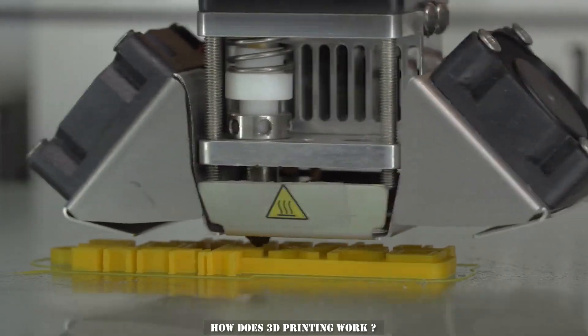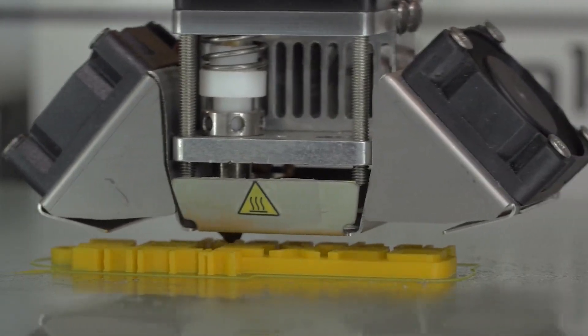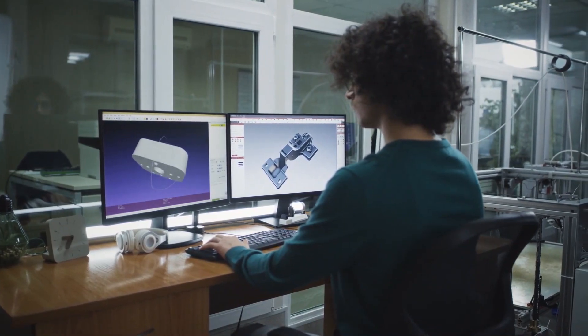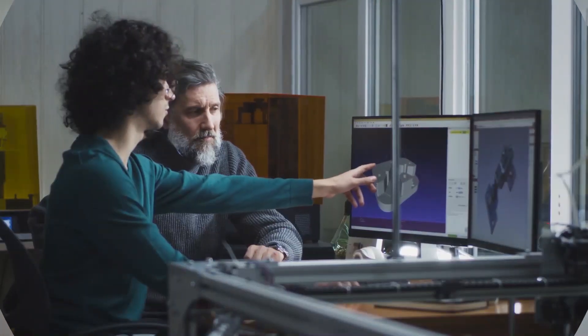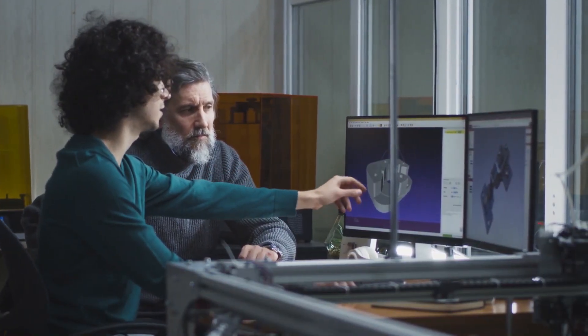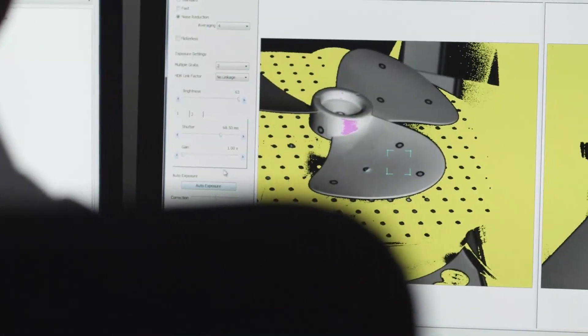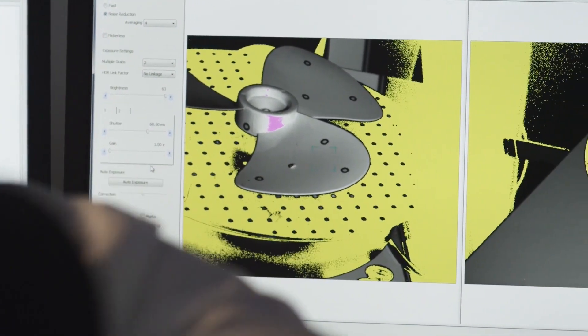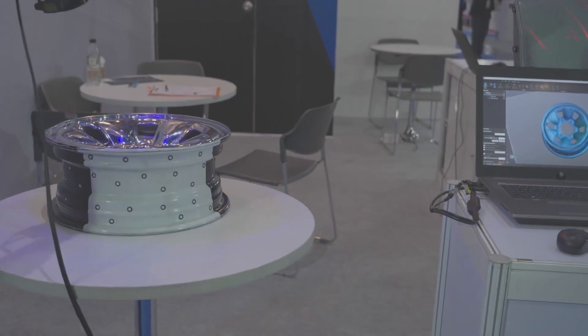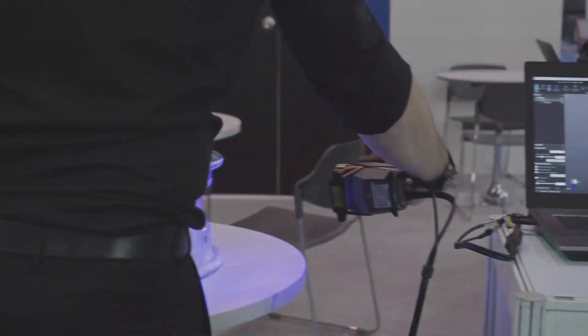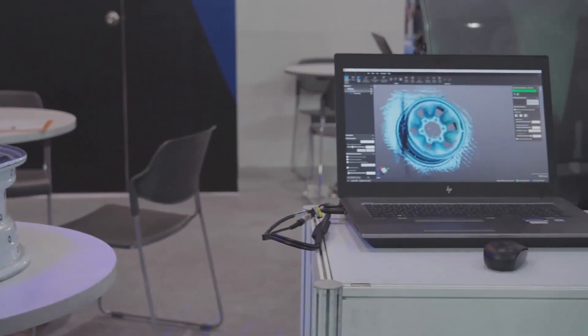How Does 3D Printing Work? First, a virtual design of the object is made. This design will work like a blueprint for the 3D printer to read. The virtual design is made using computer-aided design, CAD software, a type of software that can create precise drawings and technical illustrations. A virtual design can also be made using a 3D scanner, which creates a copy of an existing object by taking pictures of it from different angles.